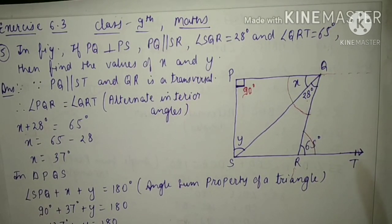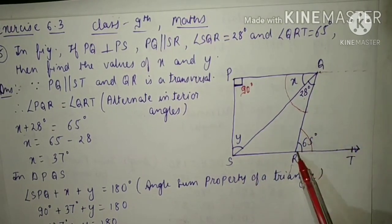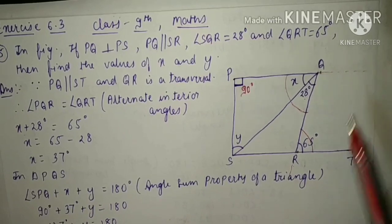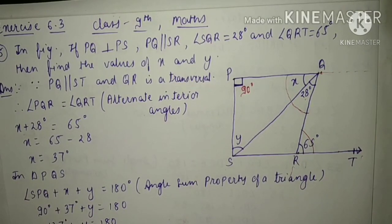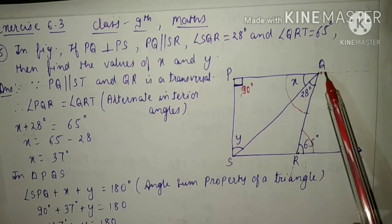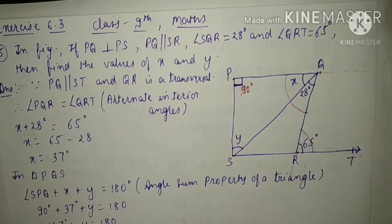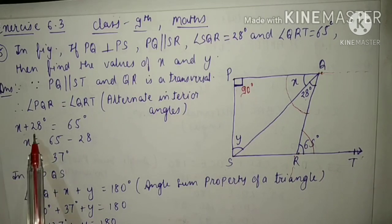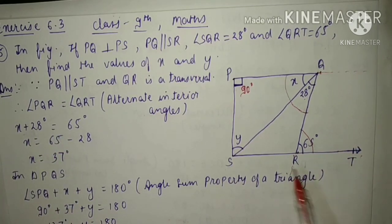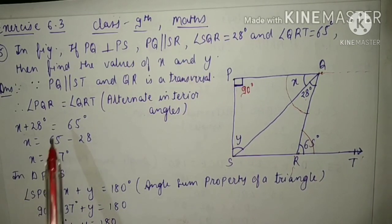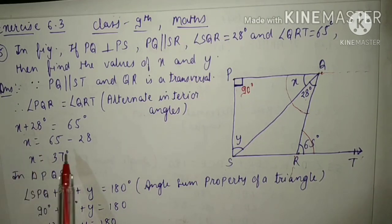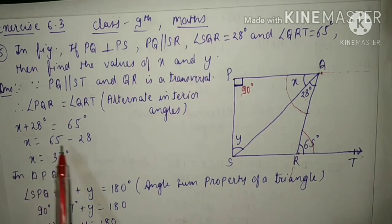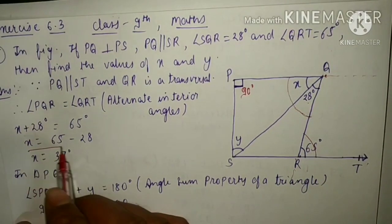So we can write angle PQR equals angle QRT. Angle PQR is equal to X plus 28 degrees, so X plus 28 degrees equals 65 degrees. Therefore X equals 65 minus 28, which is 37 degrees.